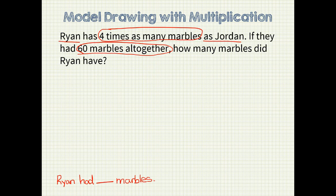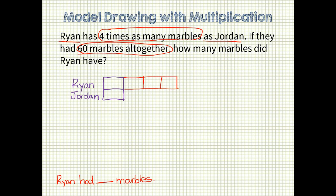With multiplication, we want to start everyone out with the same size unit piece and then adjust from that starting point. So I will give Ryan and Jordan each one unit. Now looking at the problem again, I see that Ryan has four times as many marbles as Jordan, so I need to make sure he has four times as many unit bars as Jordan does. So I will give him three more unit bars.